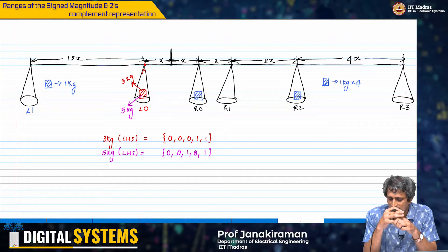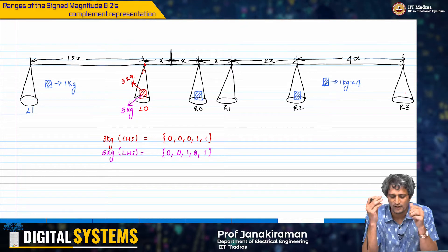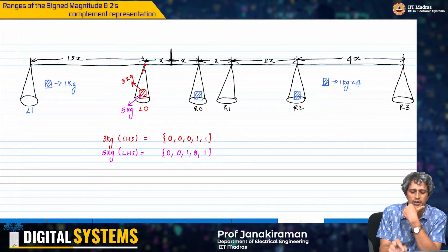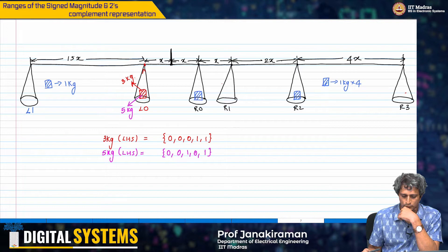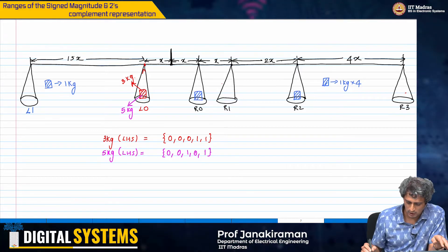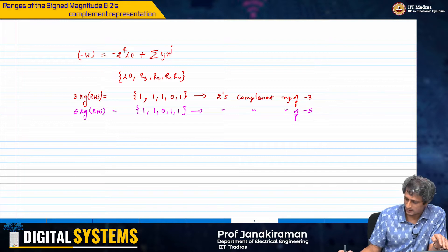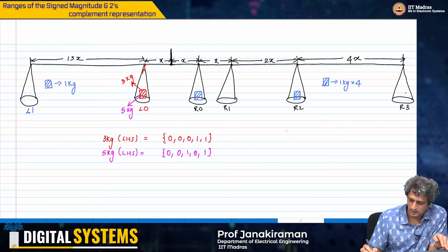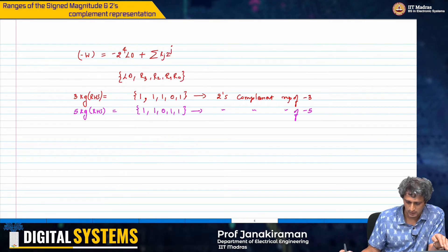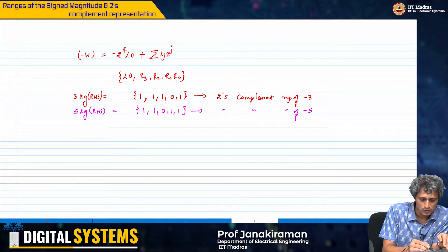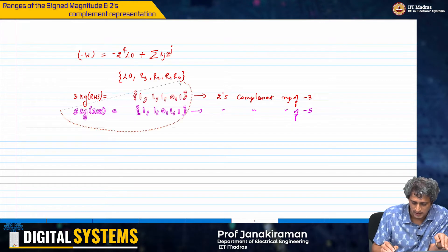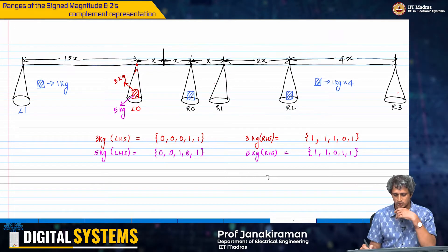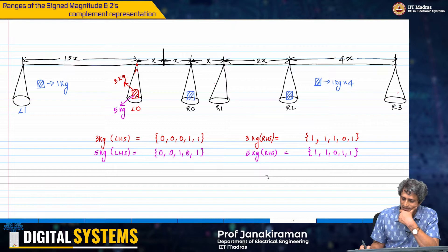Let us also look at the relationship — what happened when we actually just took the weight from the right hand side, from R0, and put it on L0. That is important for us to see. We will look at the 2's complement representation for both cases: 3 kg on the LHS and 3 kg on the RHS side. This is a very interesting exercise.